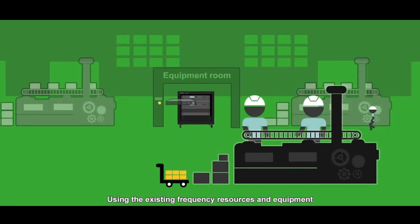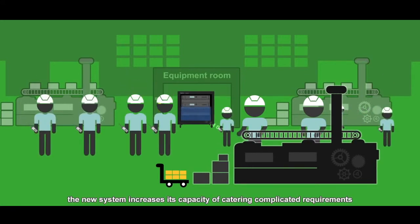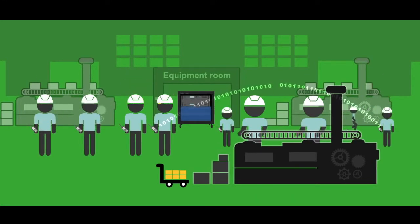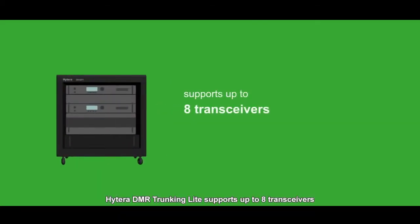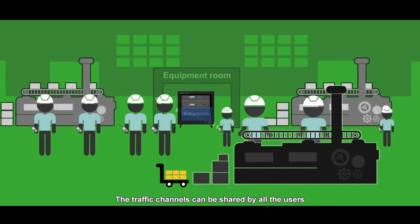Using the existing frequency resources and equipment, the new system increases its capacity of catering to complicated requirements. Hytera DMR trunking light supports up to 8 transceivers and provides 15 traffic channels per base station. The traffic channels can be shared by all the users.